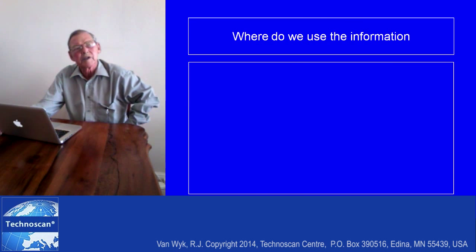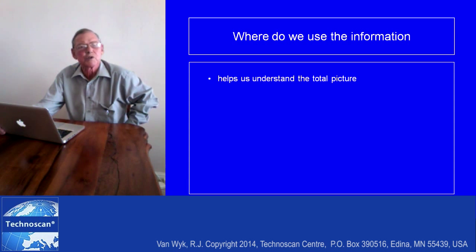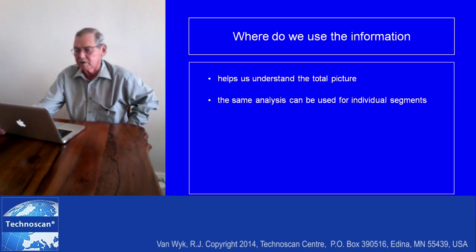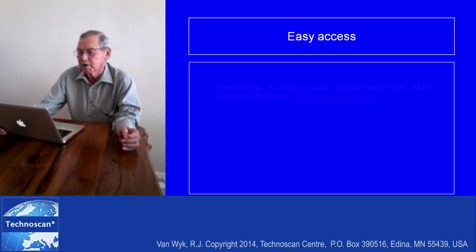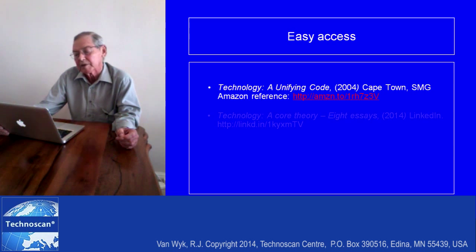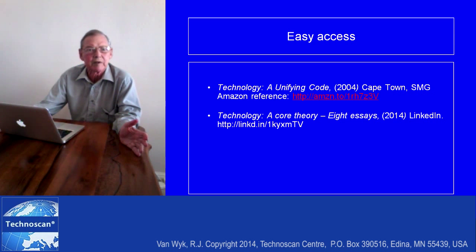The question that comes up is where do we use this information. It helps us understand the total picture, which is so important. The same analysis can be done for individual segments going into more depth. For access to this information, there is a book — Technology Unifying Code — which came out in 2004. Recently, a significant experiment was tried by putting Technology: A Core Theory as eight essays on LinkedIn, available for public scrutiny.